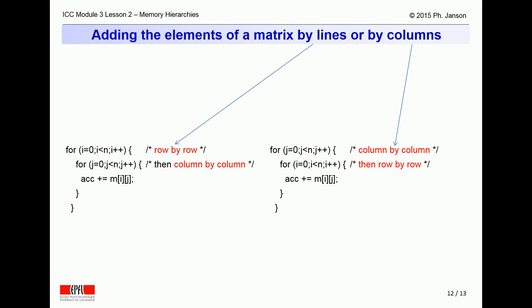If the matrix is stored row by row, it will be imported in the cache row by row. If the program then adds the elements row by row, the elements will be found in the cache in the order in which they are added, thus causing as few cache faults as possible.